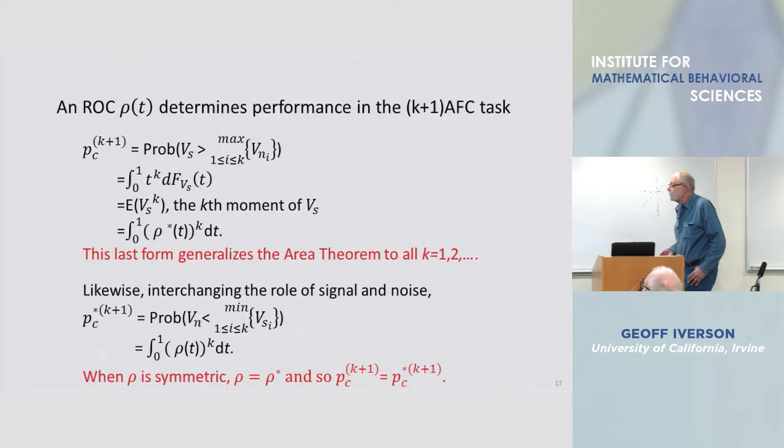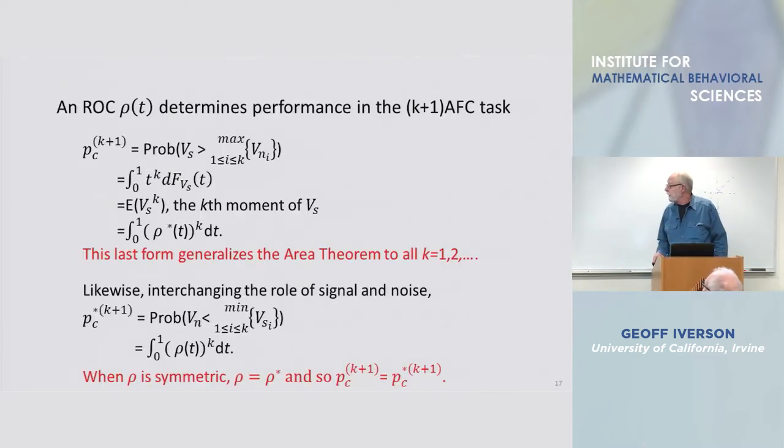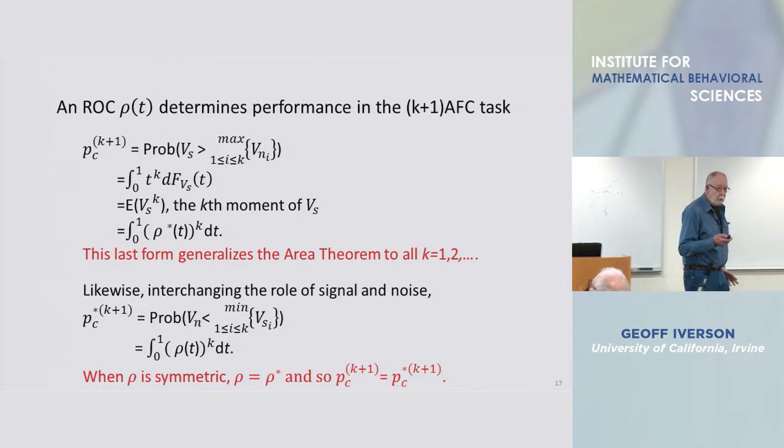So Green and Moses are correct but they might not recognize this. You can do the dual task and there you see the appearance of the original ROC. I should mention when rho is symmetric, the data from the k plus one forced choice task and its dual, those data are one and the same.